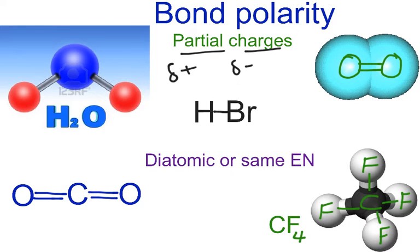Electronegativity is the ability for an atom to pull or attract electrons towards itself in a chemical bond. For example, we'll use a classic example — we'll use water, H2O.